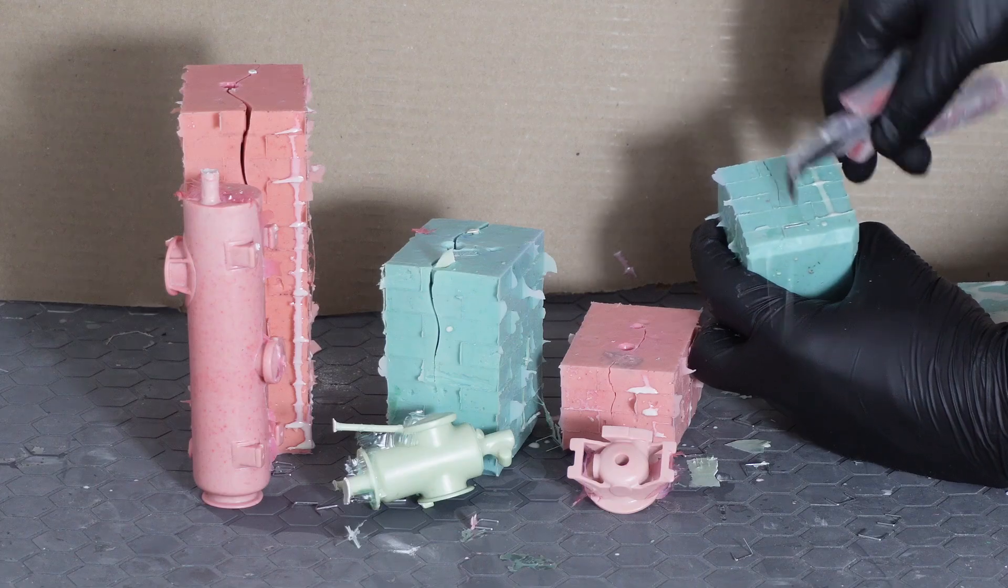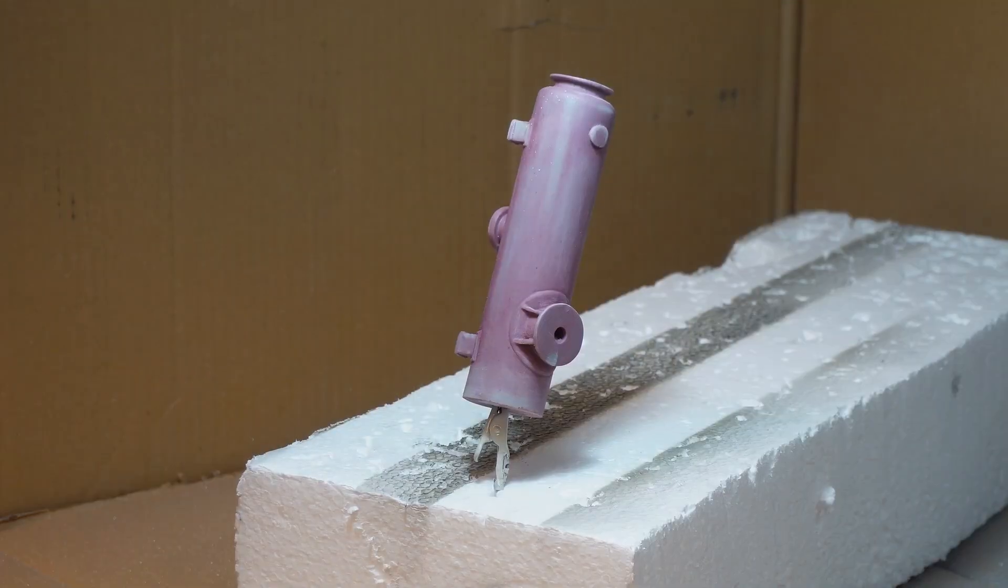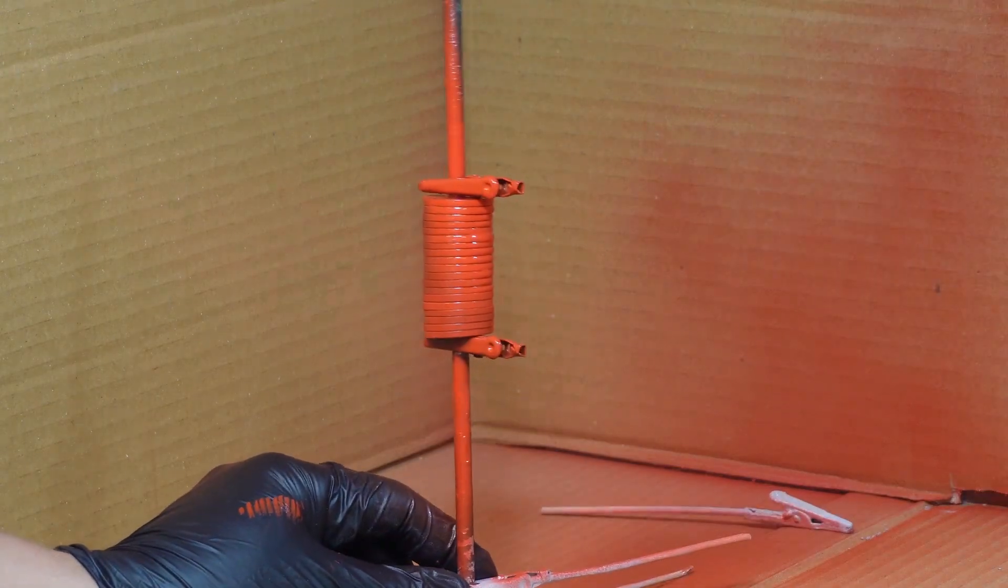Once cured, the parts are demolded and given a quick sanding to remove parting lines or small imperfections. Then we apply a base coat to prepare the surface for painting, improving both finish and consistency.